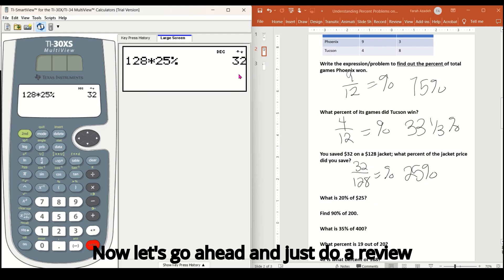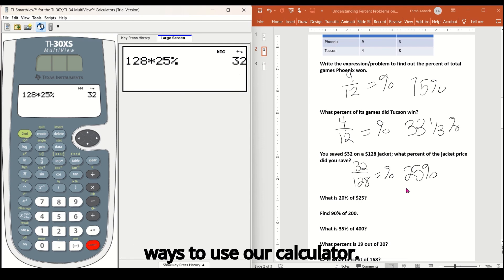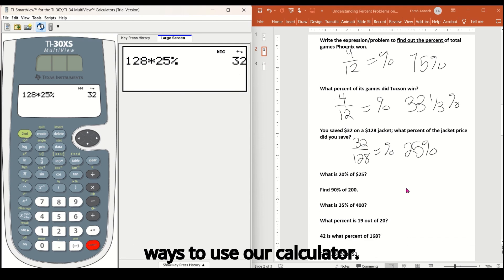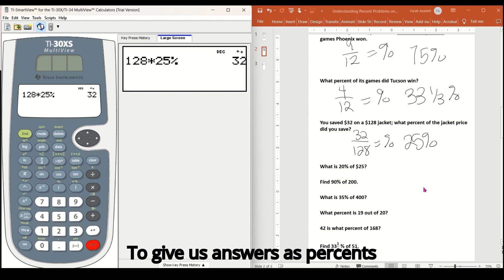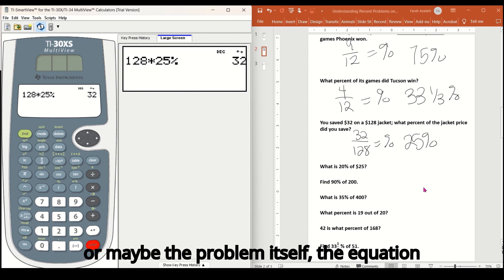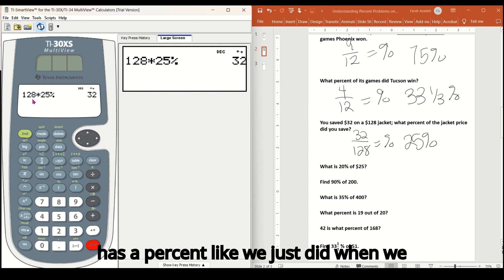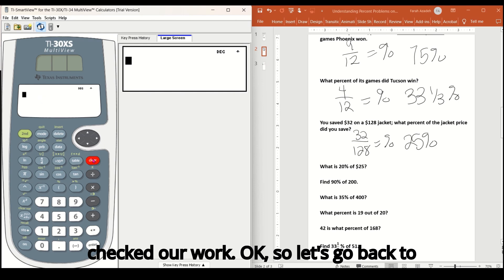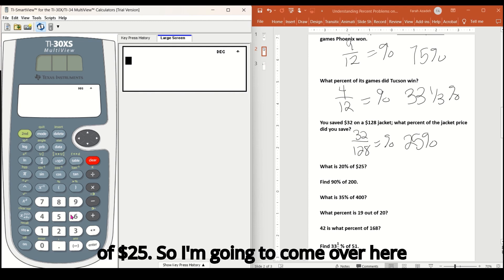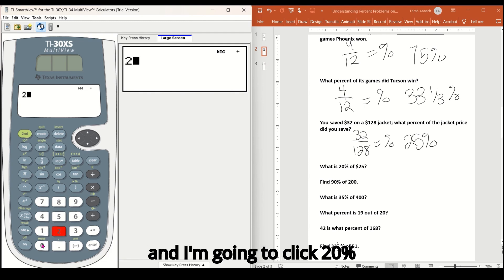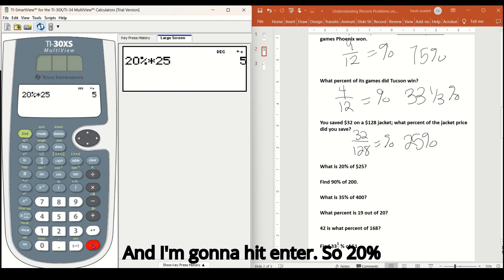Now let's go ahead and just do a review of what we've learned today, different ways to use our calculator to give us answers as percents, or maybe the problem itself, the equation has a percent like we just did when we checked our work. So let's go back to our calculator and clear it. The first one asks, what is 20% of $25. So I'm going to come over here and I'm going to click 20% second, I got to get that percent times $25. I'm going to hit enter. So 20% of $25 is $5. Awesome.